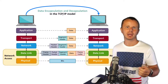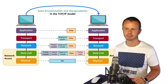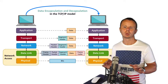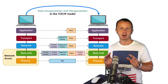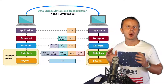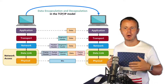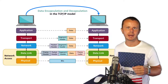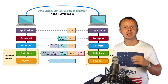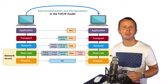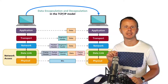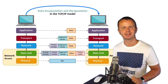In summary, encapsulation is the process of adding additional data on each layer of the model, and decapsulation is performed on the recipient in the opposite way until data is received by the application layer. That's all about TCP/IP and OSI models. Next, let's talk about the data link layer and specifically the Ethernet protocol, and discuss what a MAC address is and how MAC addresses are used for data transmission on the data link layer.